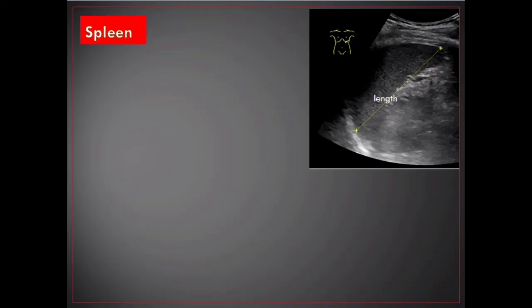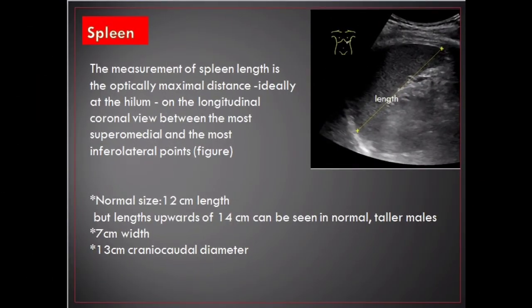Width 7 centimeters, craniocaudal diameter 8 centimeters. Some causes of splenomegaly are hematological disease, hemodynamic causes, infectious diseases, storage diseases, neoplastic, traumatic, or connective tissue disorders.